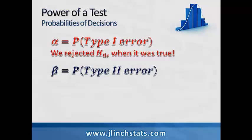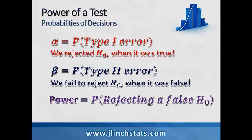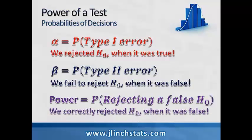Beta is the probability of a Type 2 error. In a Type 2 error, we failed to reject H0, however we later on find out that it was false. Beta is the probability that when we failed to reject H0 — because our data wasn't quite extreme enough and the p-value was a little bit higher than our level of significance — we didn't have enough evidence to reject H0. However, later on we find out that we should have rejected H0 all along. The probability of this happening is represented by beta. Power is the probability of rejecting a false H0 — we correctly rejected H0 when it was false.